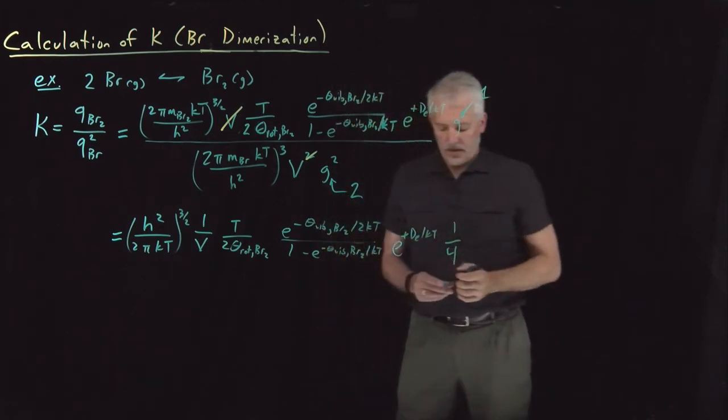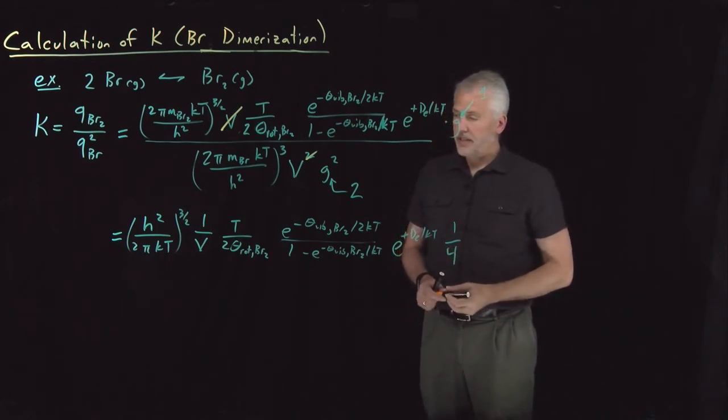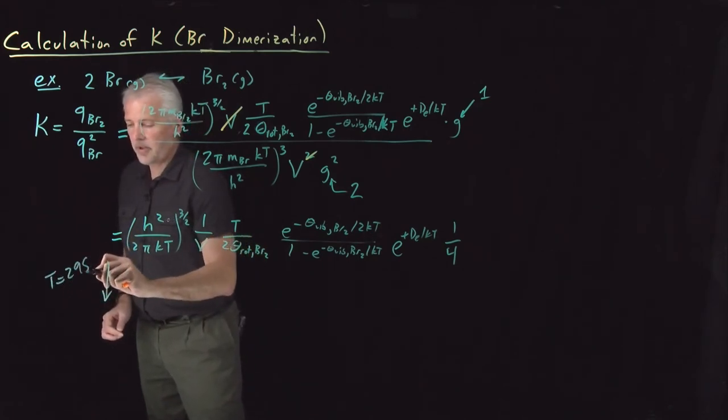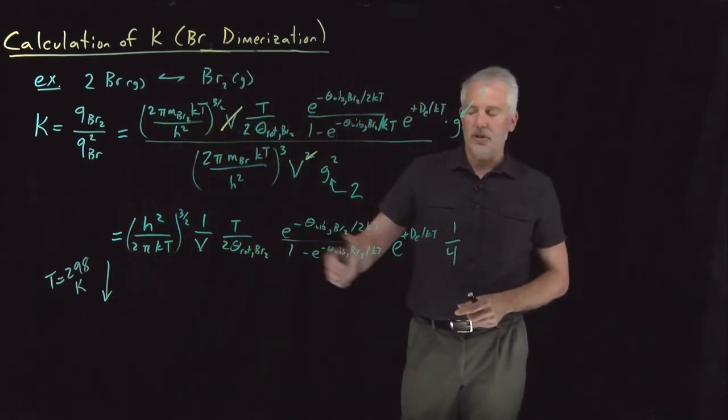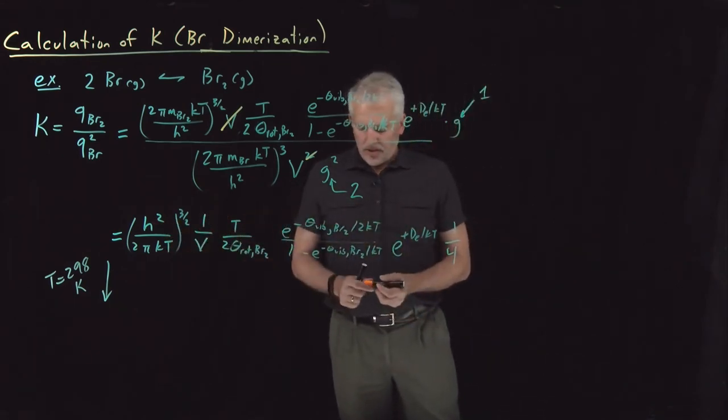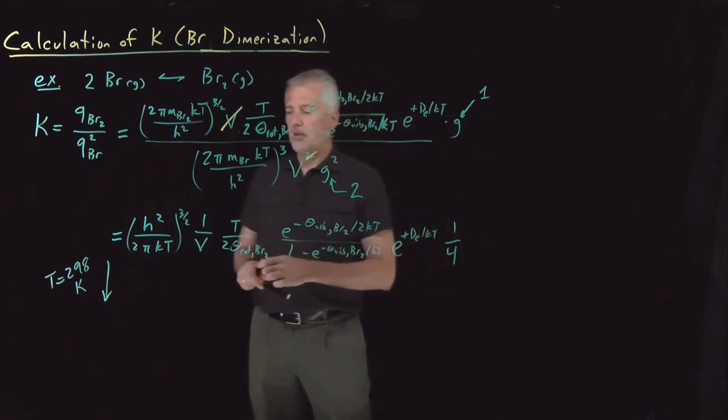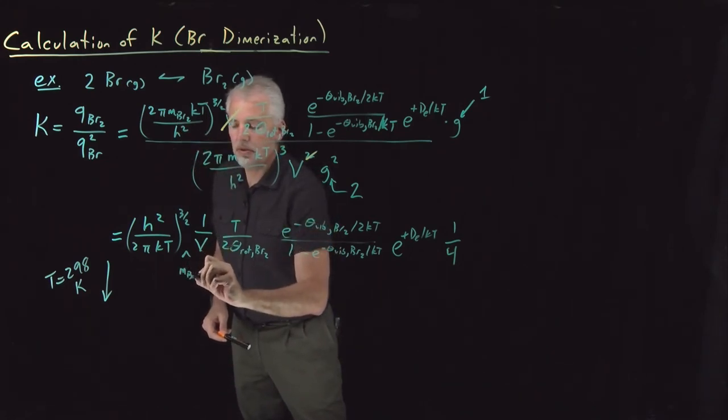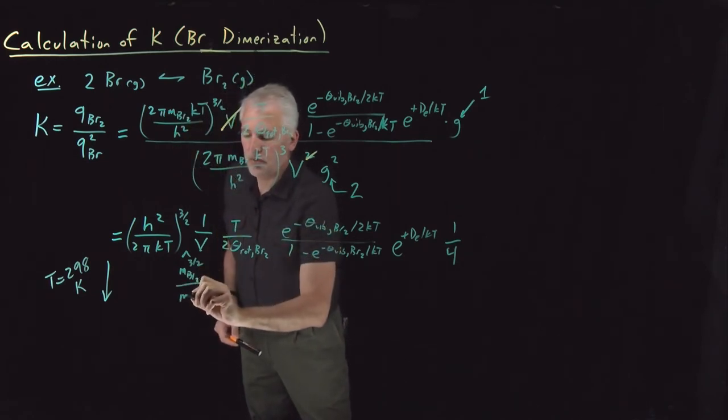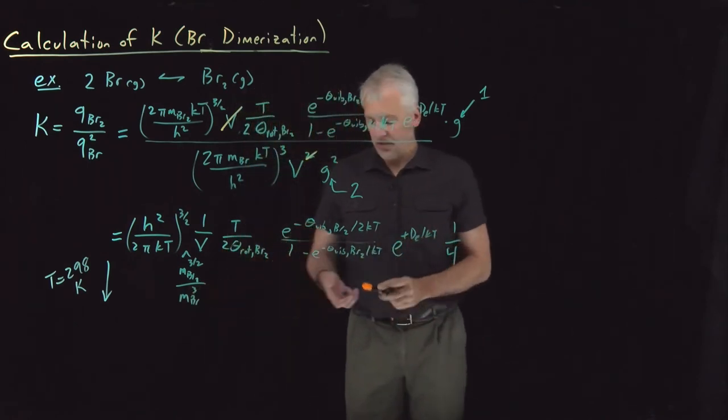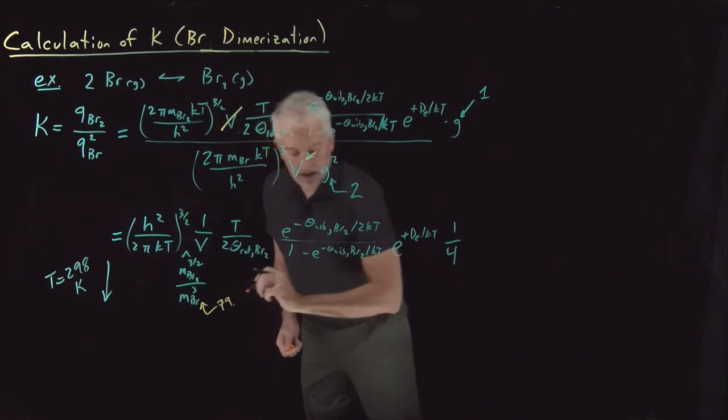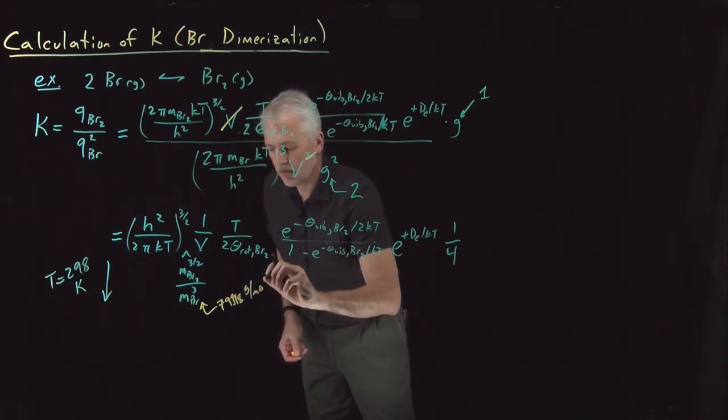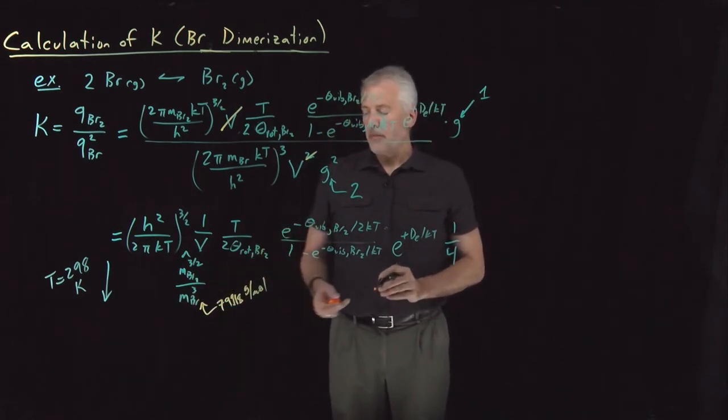So as before, we can plug in some numbers and see what value this quantity has. Let's say this partition function, let's calculate at a temperature of 298 Kelvin. So every time I need to plug in a temperature, I'll use 298. We know many of these constants. Oh, I've forgotten the masses. So this was everything not including the masses. I've got to insert one more term here, which is mass of Br₂ to the three halves in the numerator and a mass of Br cubed in the denominator. Those masses, the mass of Br 79.9, I believe, 79.918, sorry, 79.918 grams per mole for the mass of bromine. Double that for the mass of bromine molecules.